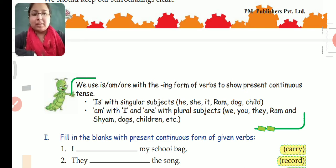So I think it is clear that 'is' is used with singular subjects - that is he, she, it, Ram, dog, child. 'Am' with I - we always use 'am' with I. And we use 'are' with plural subjects - that is we, you, they, Ram and Shyam, dogs, children. Plural means more than one. And with the helping verb we add -ing to show present continuous tense.